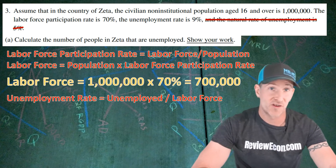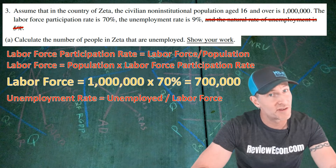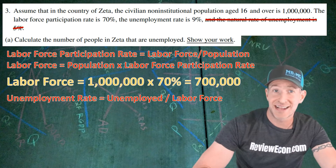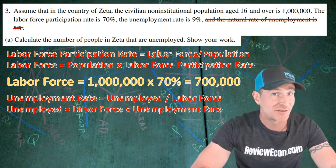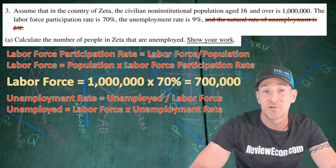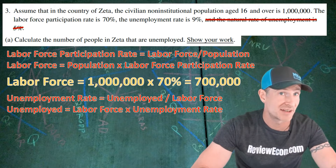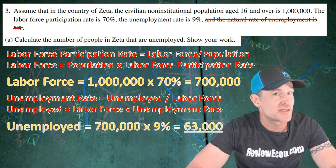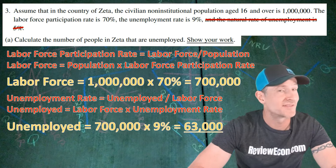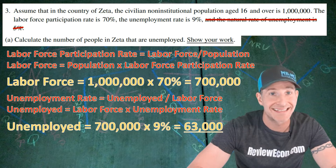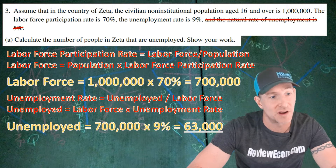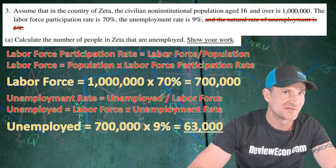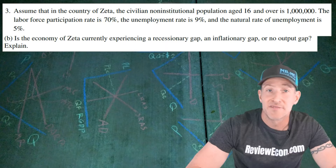We also have to remember that the formula for the unemployment rate is the number of unemployed people divided by the labor force. Rearranging that formula, the number of unemployed people equals the labor force times the unemployment rate. Taking that labor force of 700,000 times the unemployment rate of 9% gives us 63,000 people who are unemployed. If you have those calculations shown, you get yourself a point.